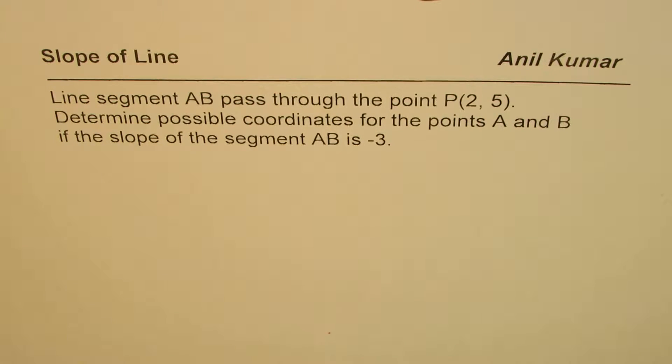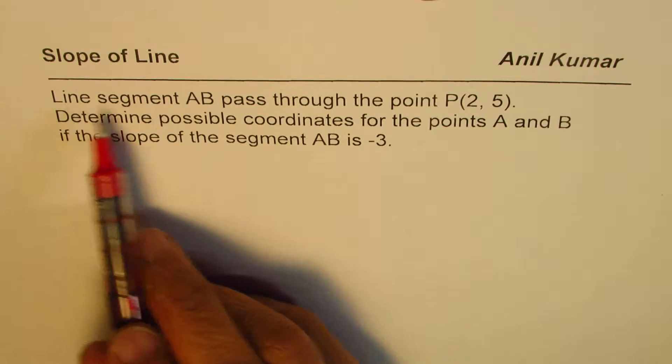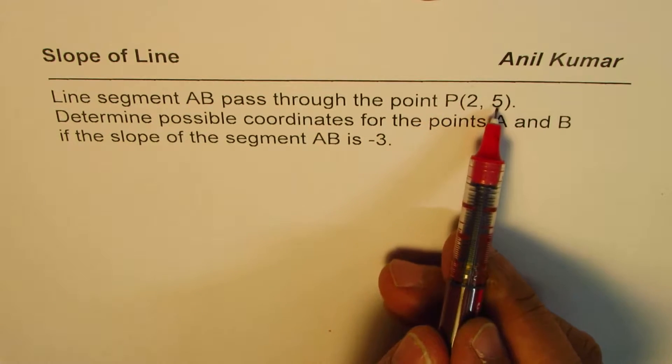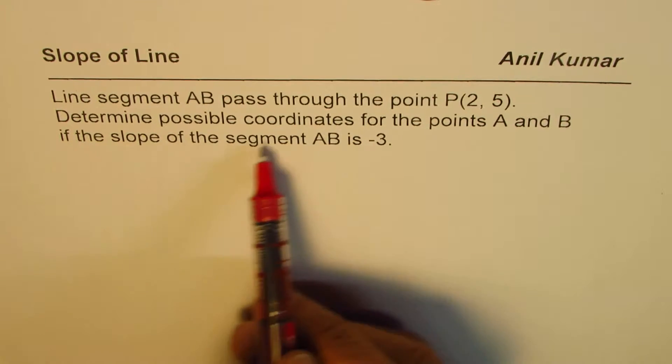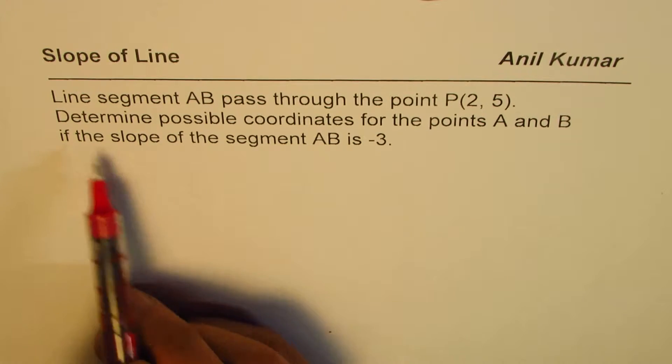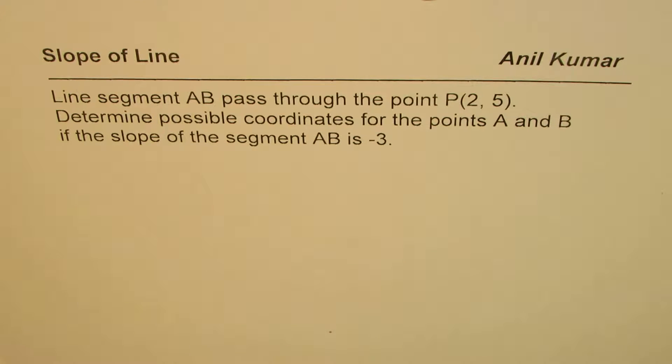I'm Anil Kumar and here is a very interesting video to understand slope of line. The question here is: line segment AB passes through the point P(2, 5). Determine possible coordinates for points A and B if the slope of segment AB is -3. That's the question for you.